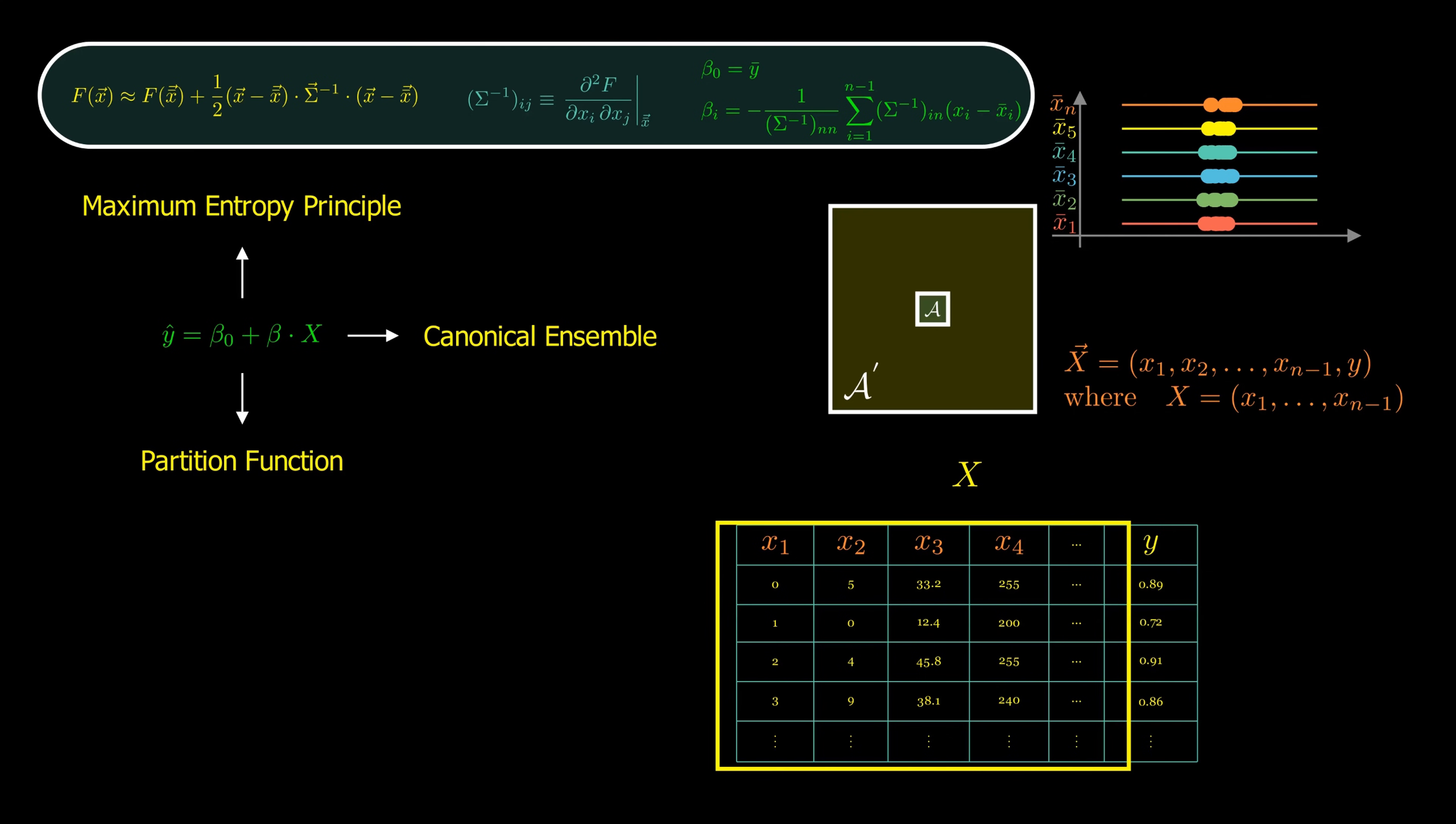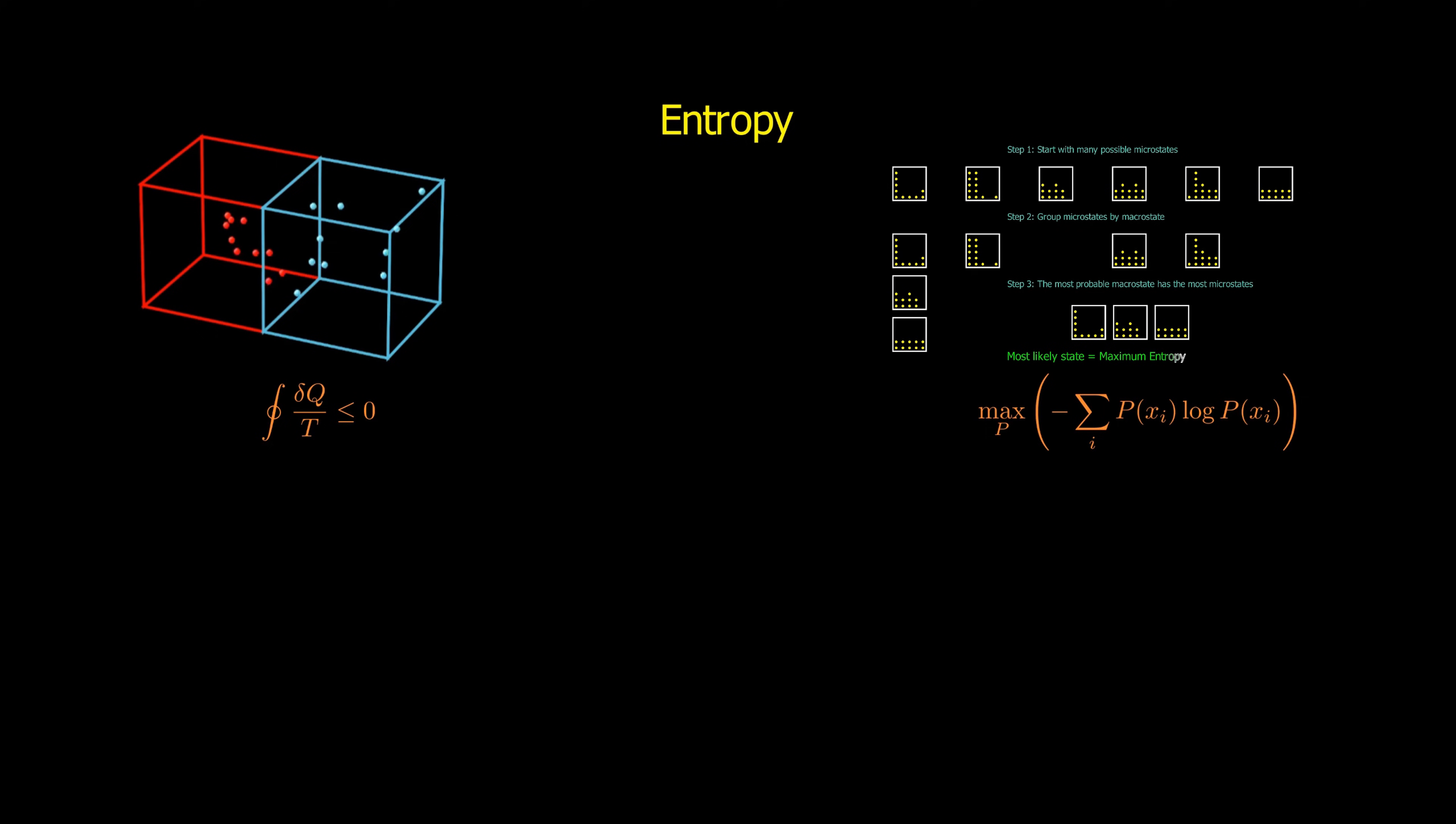In this video, we explored the deep connection between a physical system governed by the canonical ensemble and a typical machine learning system. But this naturally raises a bigger question. Why does this connection exist in the first place? The answer lies in a fundamental principle shared by both worlds, the concept of entropy. In physics, entropy is ruled by the second law of thermodynamics. In machine learning, it's governed by the principle of maximum entropy. And both essentially say this: an isolated system will evolve toward the state that maximizes its entropy.